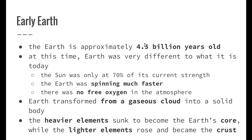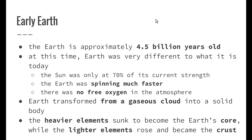Before we begin, we're going to have a look at what we mean by the term early Earth. The Earth is believed to be approximately 4.5 billion years old. Back then, the sun was only at about 70% of its current strength, the Earth was spinning much faster with the day only being about 18 hours instead of 24, and there was no free oxygen in the atmosphere.